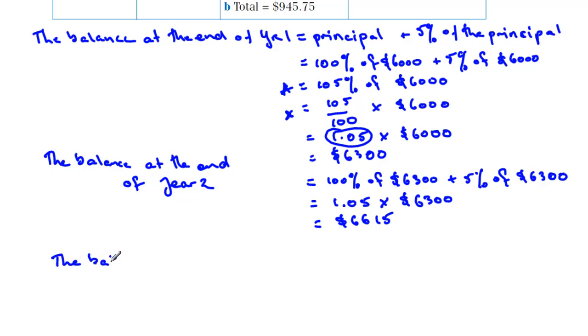At the end of year 3, now let's think about what we've done, would be 105%, there it is there, 105 over 100, or 1.05% of the balance of the previous year, in this case $6,615. And when we work that out, we get $6,945.75.